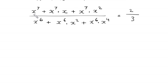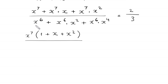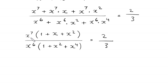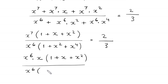From the numerator we can factor out x to the power 7 as a common factor, leaving 1 plus x plus x squared in brackets. From the denominator we can factor out x to the power 6. Then x to the power 7 can be written as x to the power 6 times x, giving us x to the power 6 times x times (1 plus x plus x squared), divided by x to the power 6 times (x squared plus x to the power 4), equal to 2 over 3.